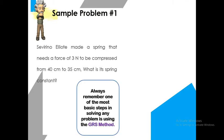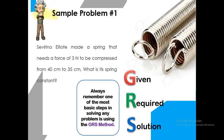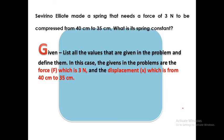Let us try to solve a sample problem. Sample problem number one: Severino Eliote made a spring that needs the force of 3 newtons to be compressed from 40 centimeters to 35 centimeters. What is the spring constant? To solve this problem, we will use the basic GRS method. G stands for given, R for required, and S for solution.